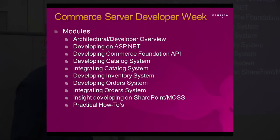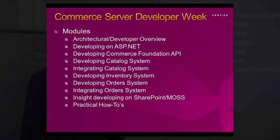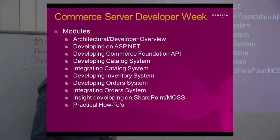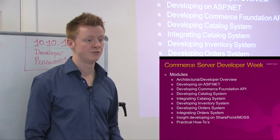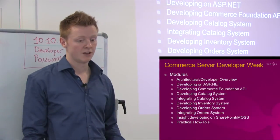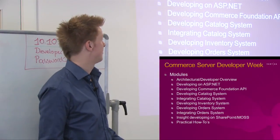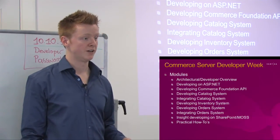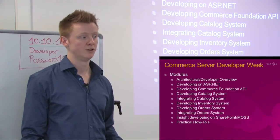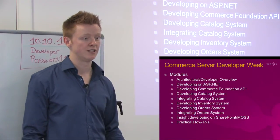The first module is the Architectural Developer Overview — a module that gives you an overview of Commerce Server as a whole. We'll look into the different bits and bytes in Commerce Server and get an overall understanding of the product. Next up is Developing on ASP.NET, where we'll look into how ASP.NET and Commerce Server work together and what you need to configure. After that is the Commerce Foundation API module, where we'll look in detail at the new Commerce Server 2009 Foundation API and all the new stuff introduced with the newest version.